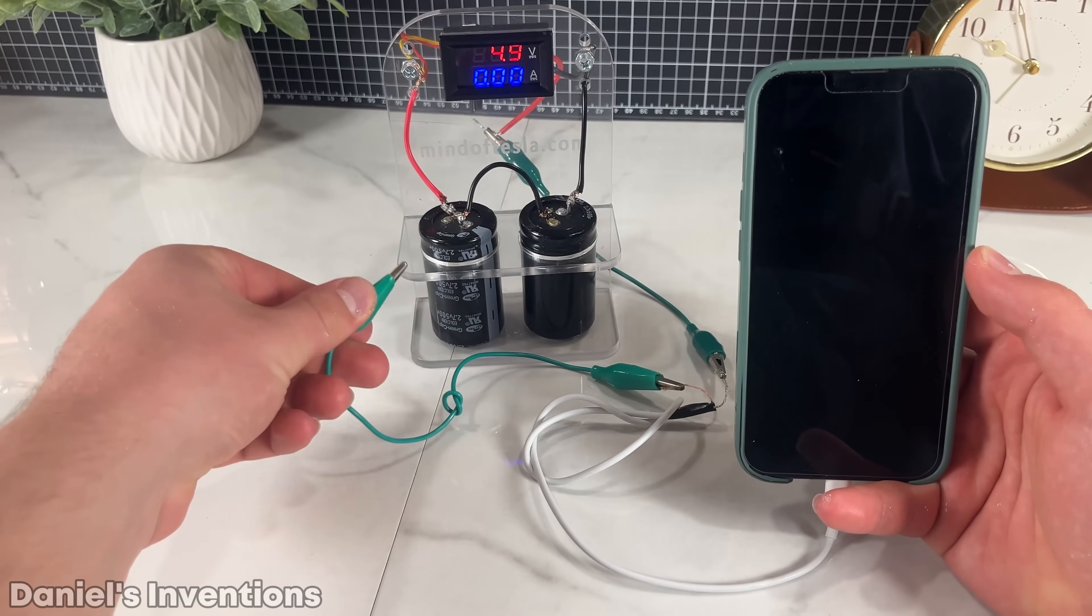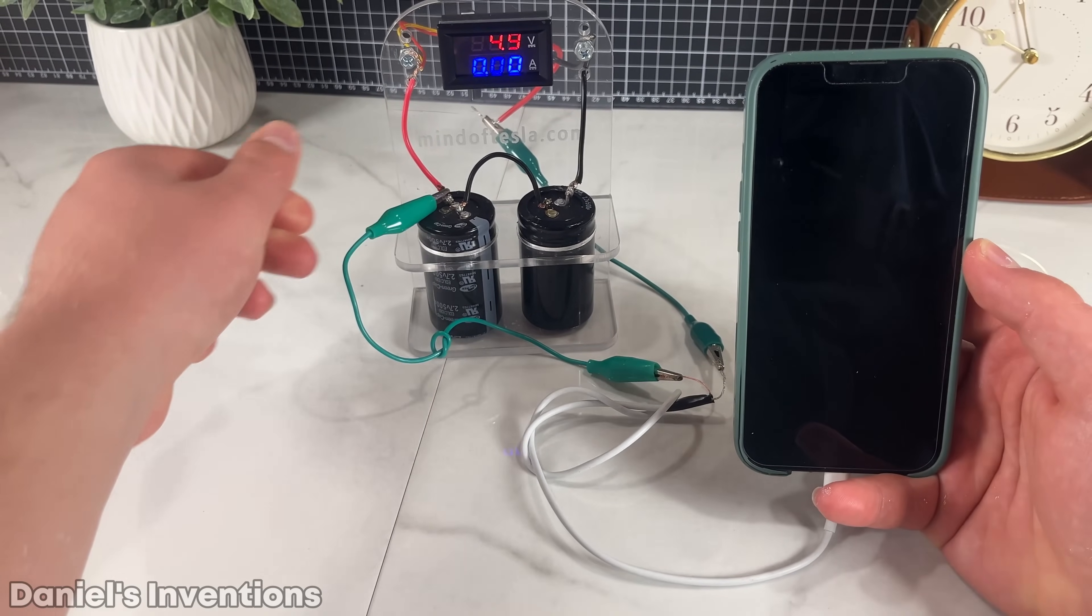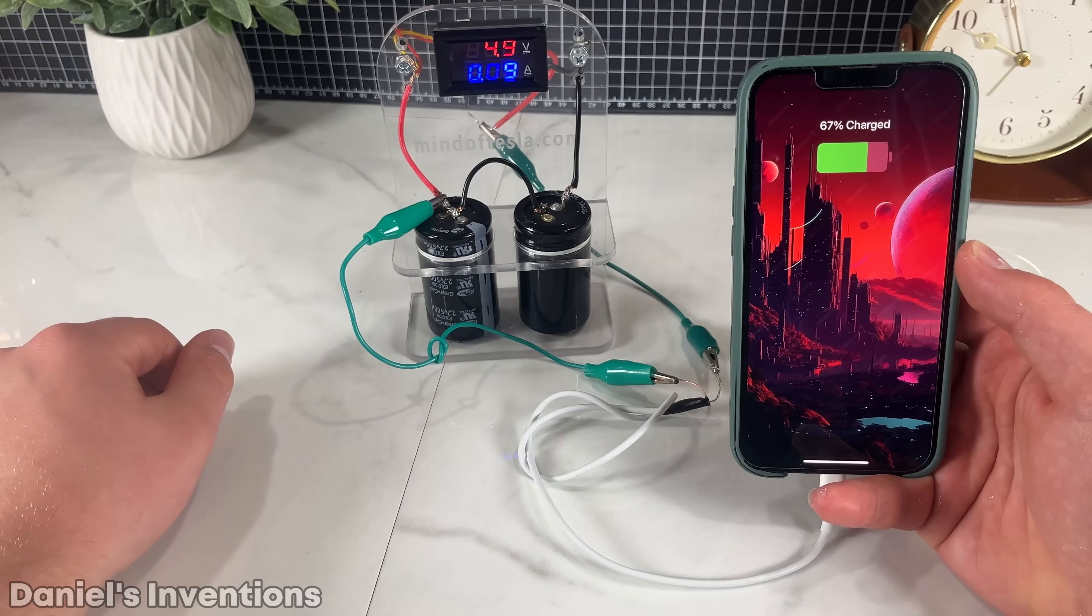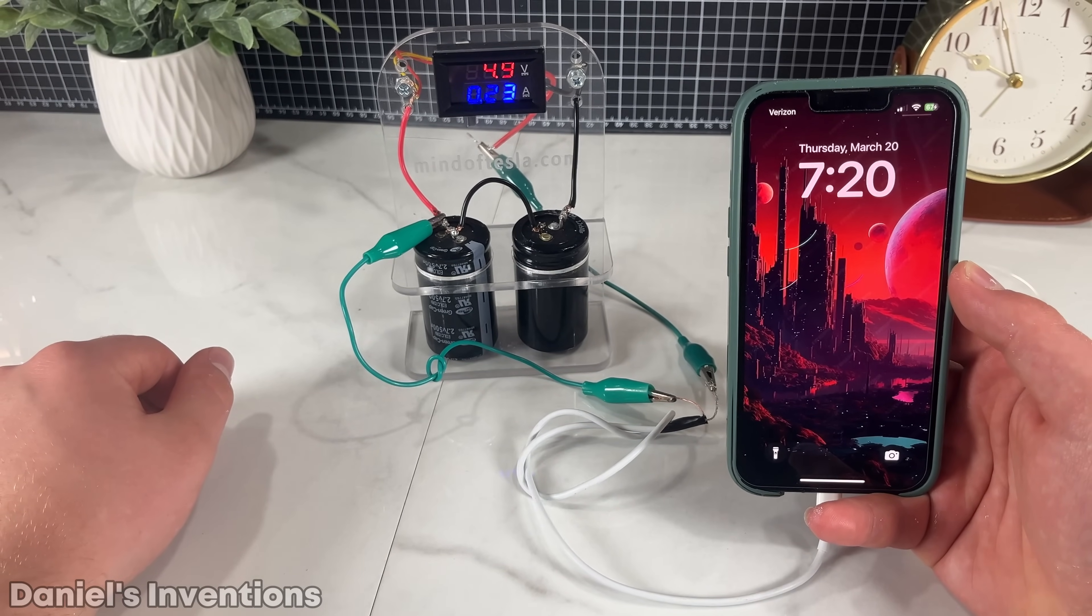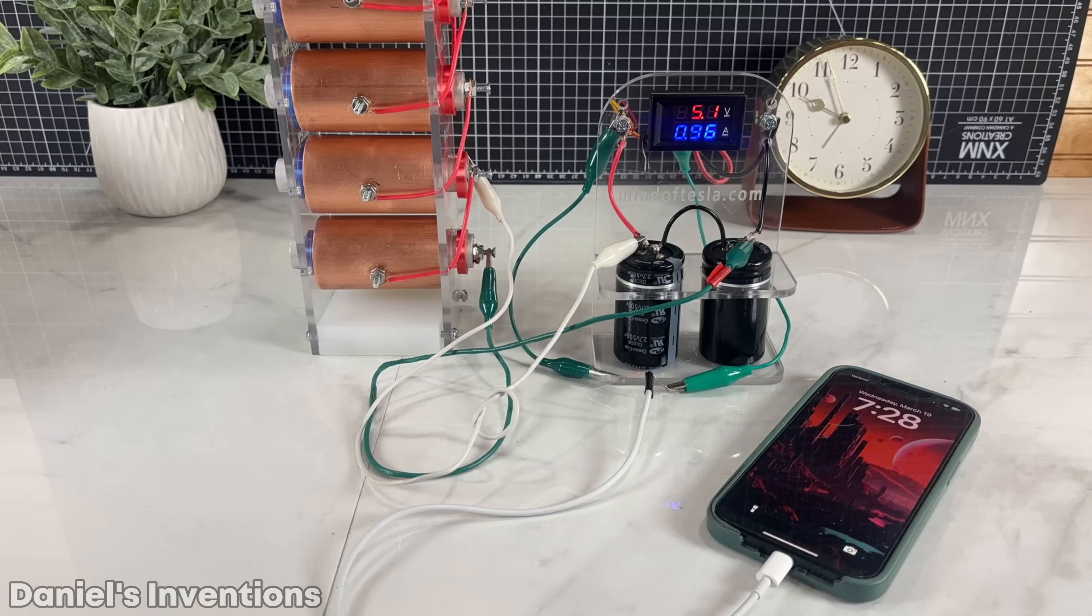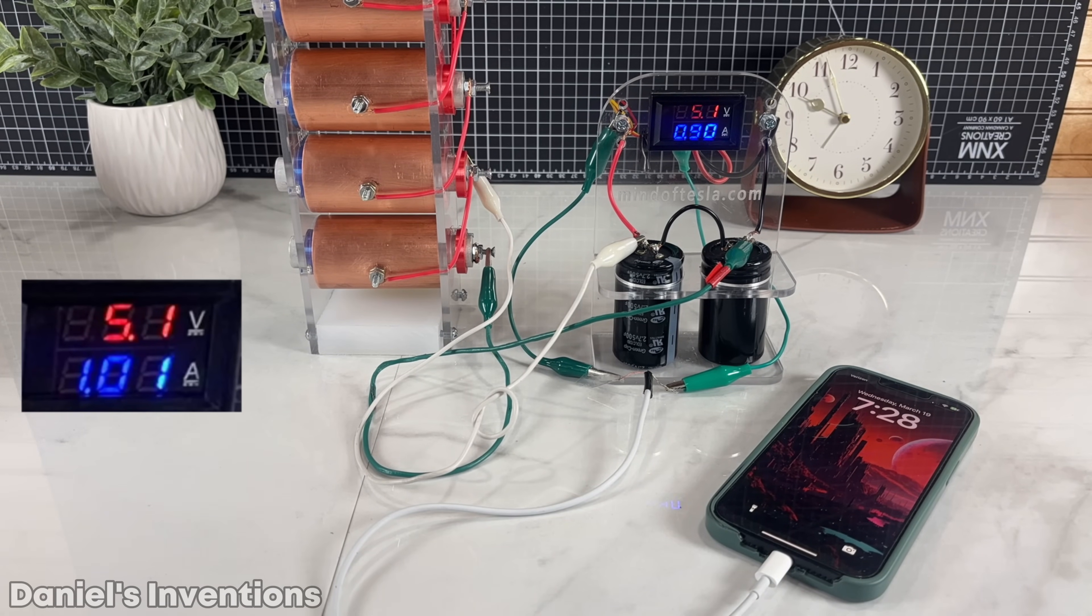The phone is pulling 0.22 amps from the supercapacitors. With the crystal cells and the supercapacitors connected together, now the phone is able to pull almost 1 amp of current, which is several times more than the supercapacitors could provide alone.